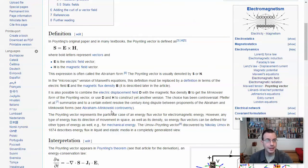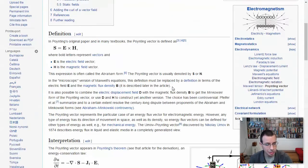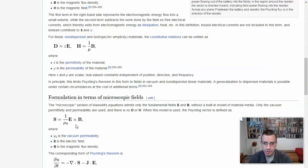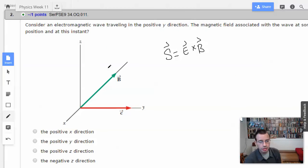So the direction of propagation is going to be e cross h, or e cross b. And we got a whole bunch of other details here. So let's see, if we have e pointing down and b going that direction, then propagation c would be that way.